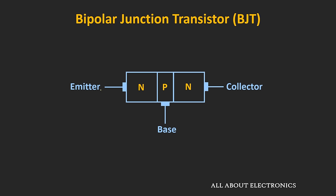In case of the NPN transistor, both the emitter and the collector are doped with the N-type impurity, and the base is doped with the P-type impurity. On the other hand, in the PNP transistor, the base is doped with the N-type impurity and the emitter and collector are doped with the P-type impurity. The term bipolar indicates that both electrons and holes contribute to the flow of current.